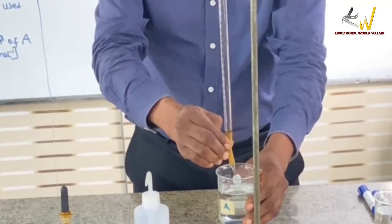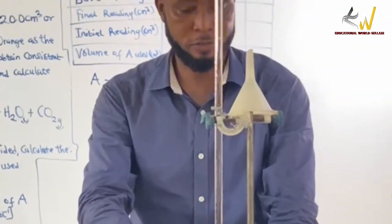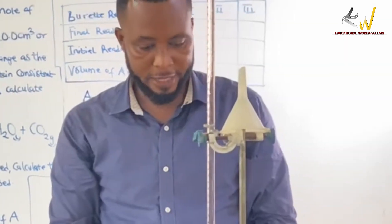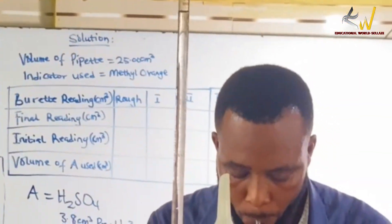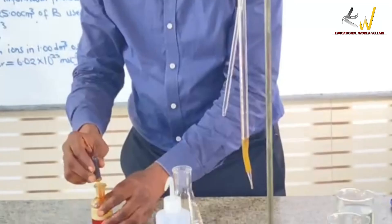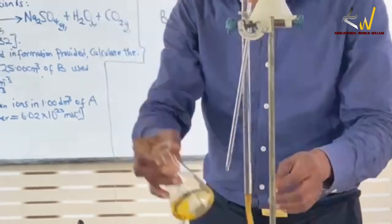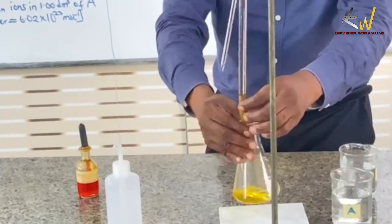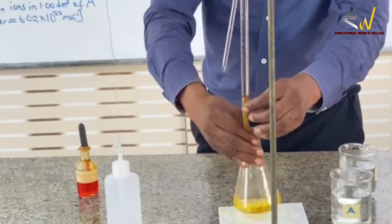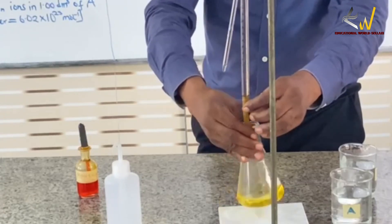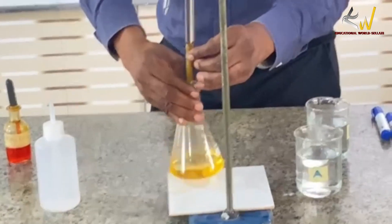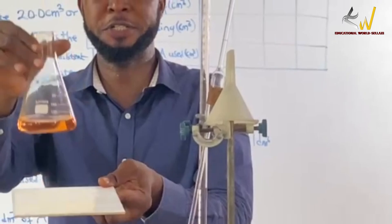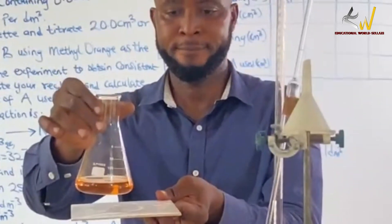Now I zero the burette and I use my pipette to measure solution B into the conical flask. I add the methyl orange indicator. I run the acid from the burette, swirling continuously. The color change will be to orange. Keep swirling while adjusting — the color change will stop at the endpoint.